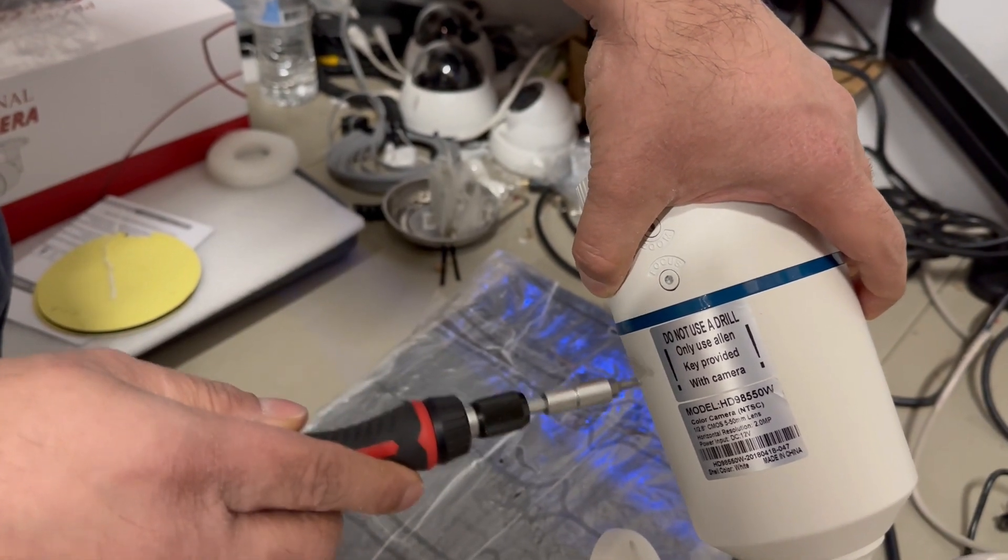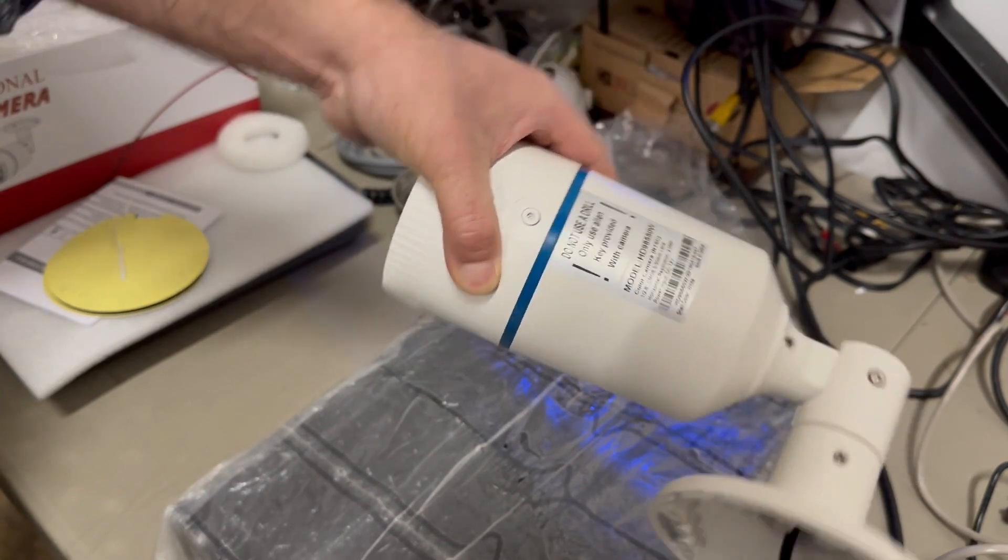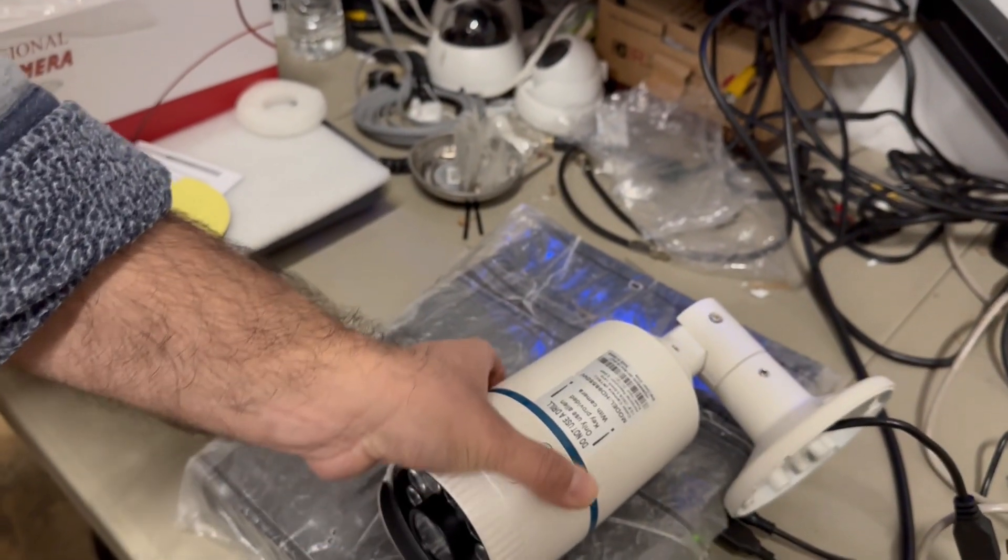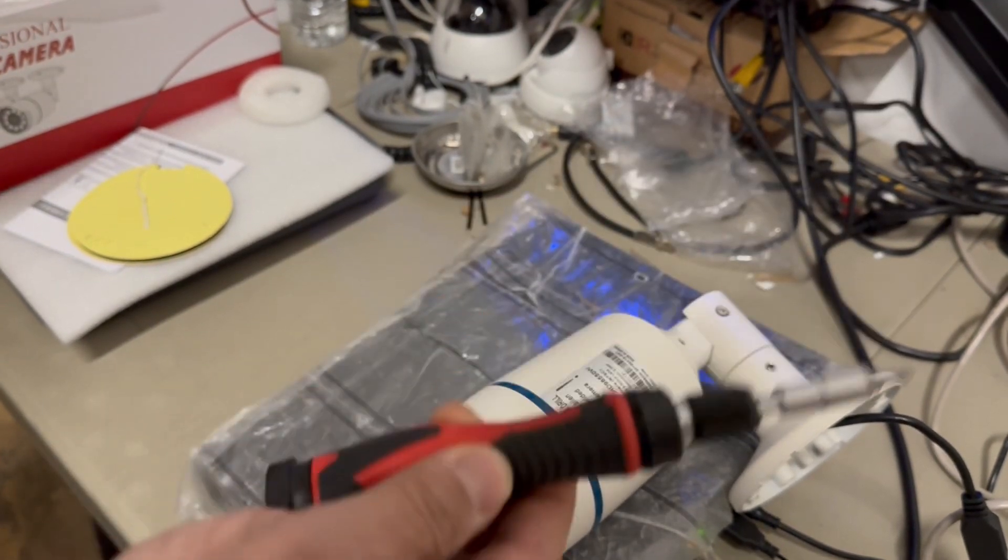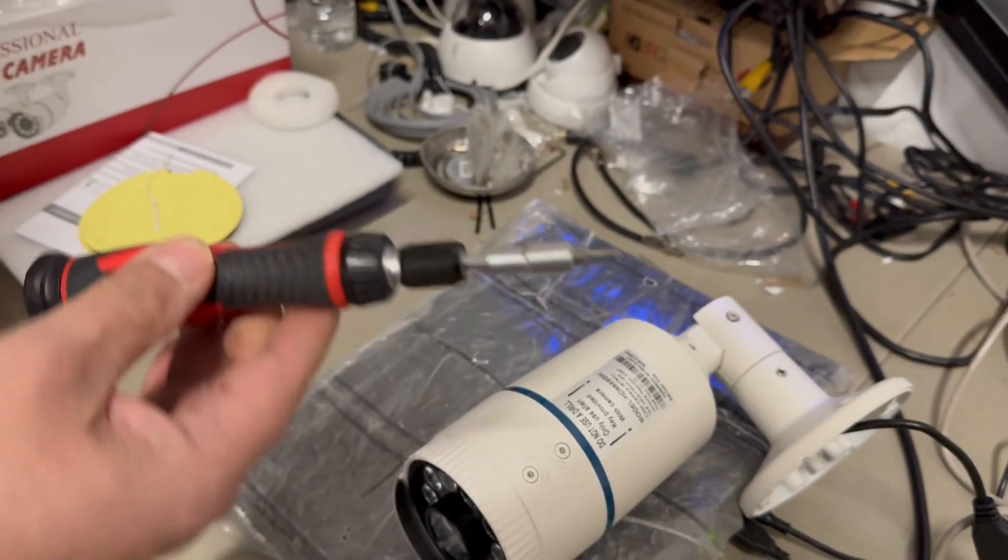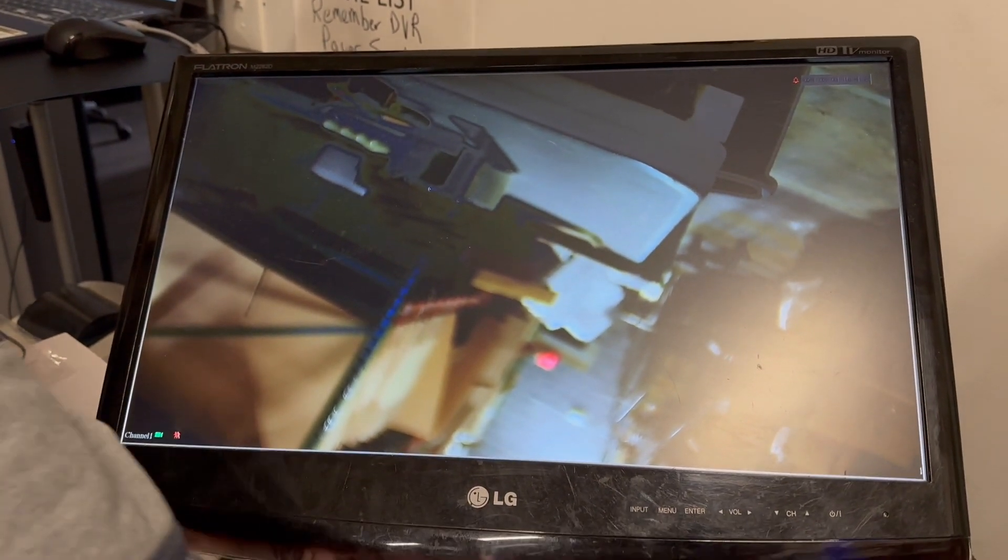At the bottom, only use the allen key provided. If you don't do that you're going to end up damaging the camera. Please no electric screwdrivers. If you want to use your own bit set you can, but again it's a hand driven screwdriver that you've got to use.